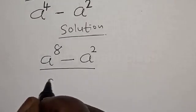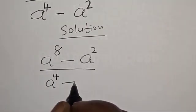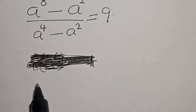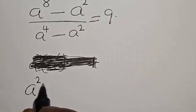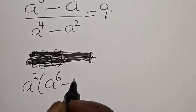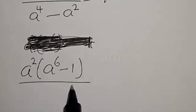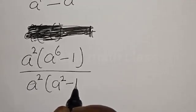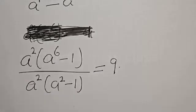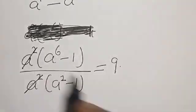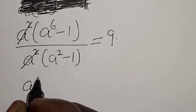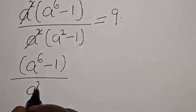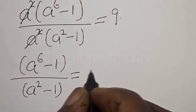Solution: we have the given equation (a⁸ - a²) / (a⁴ - a²) = 9. From here we can factor a squared out. We have a² × (a⁶ - 1) divided by a² × (a² - 1) equals 9. Now this a squared will cancel a squared, leaving (a⁶ - 1) / (a² - 1) = 9.